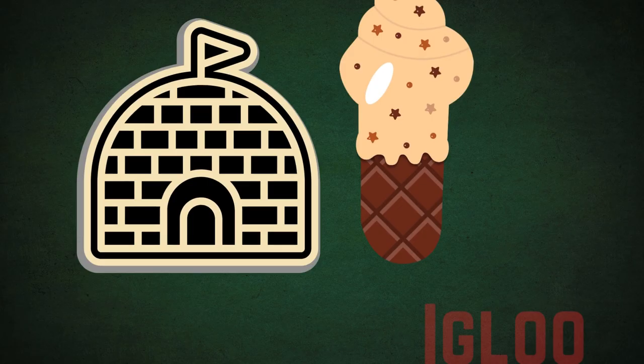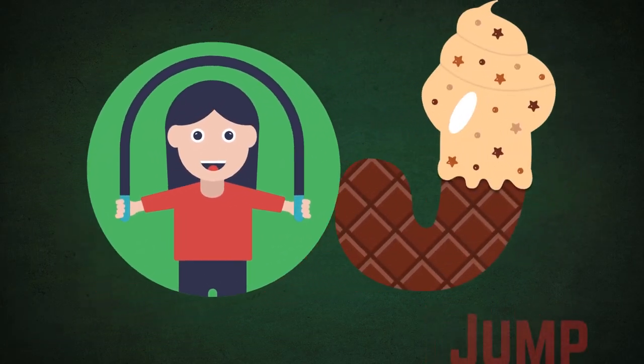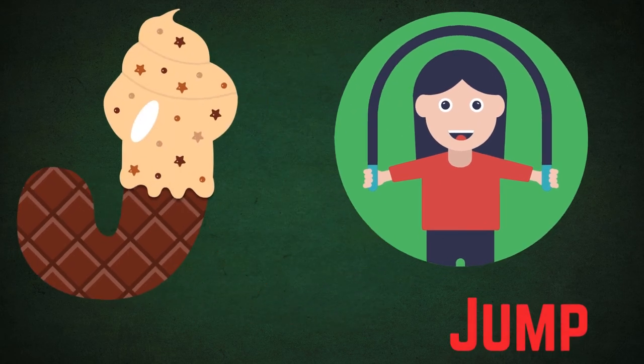I is for Igloo, I-I-Igloo. J is for Jump, J-J-Jump.